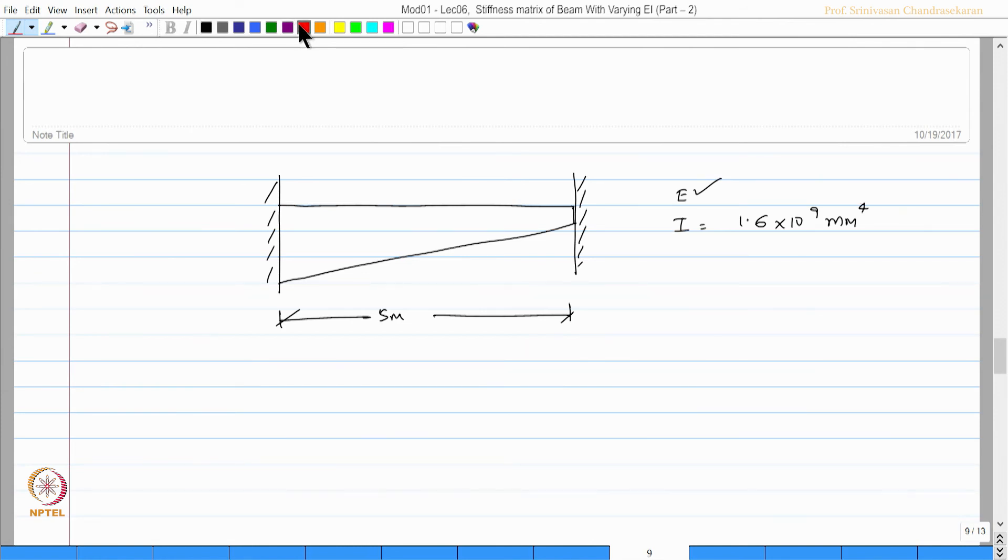Now let us mark the degrees of freedom. Let us say at this end I have theta_p, theta_q, delta_r, and delta_s. I neglect the axial deformation. I can now write the stiffness matrix readily by knowing the coefficients of these two, because now if you look at the stiffness matrix, we can straight away say K will be actually equal to EI times of.